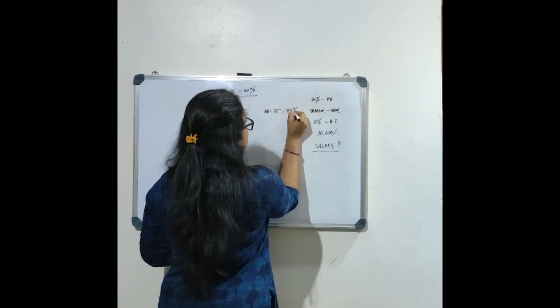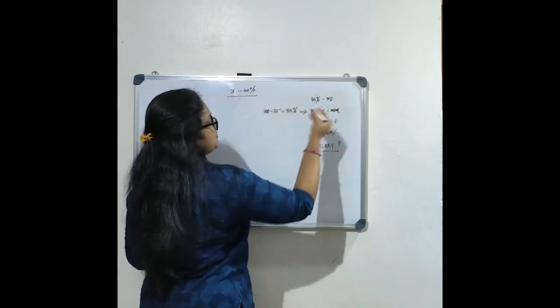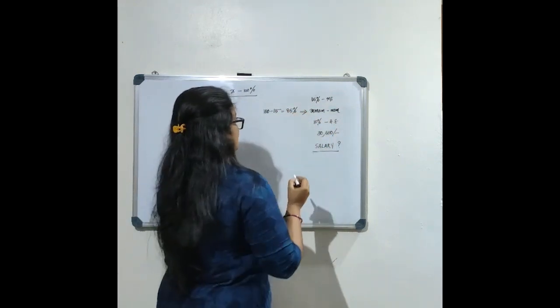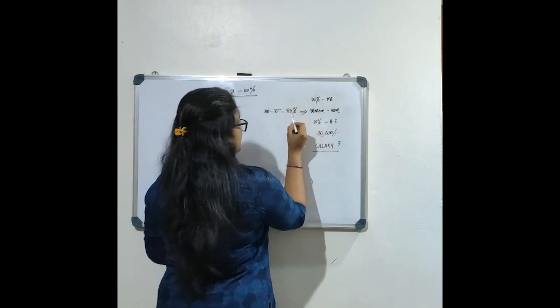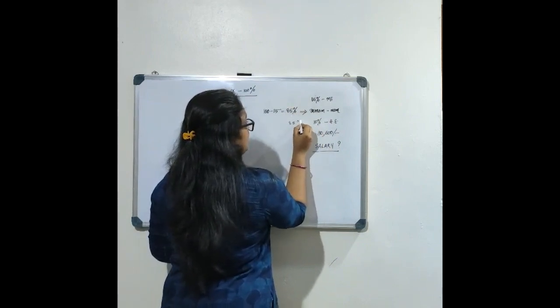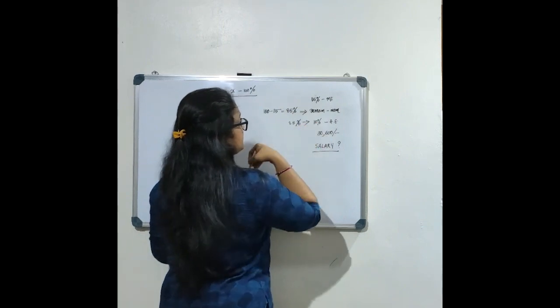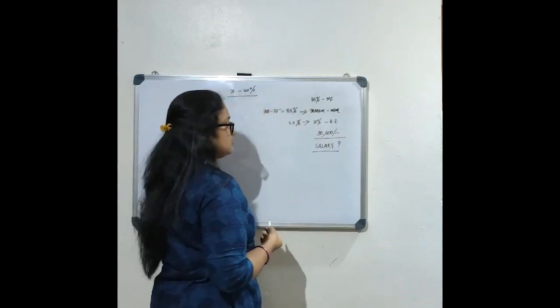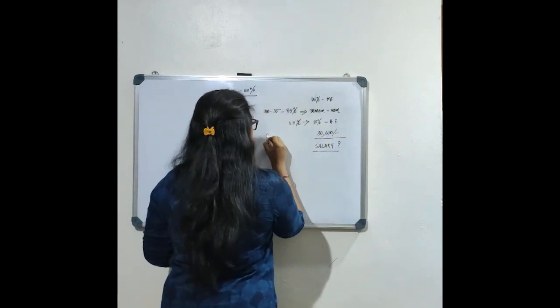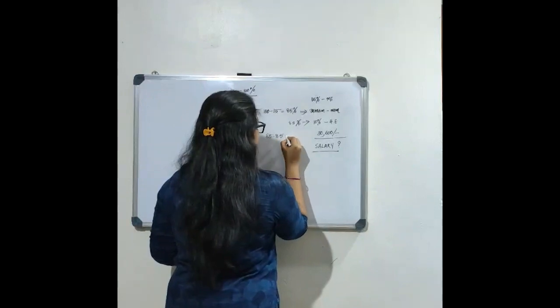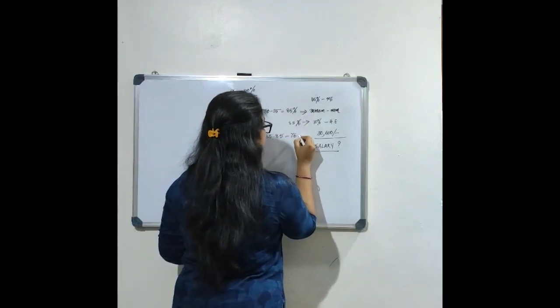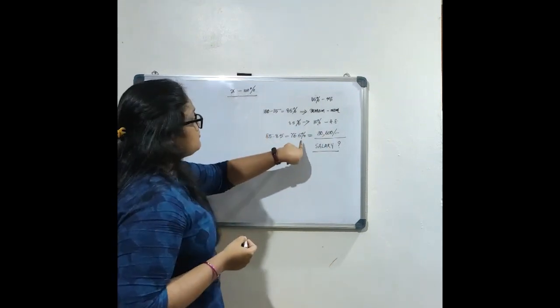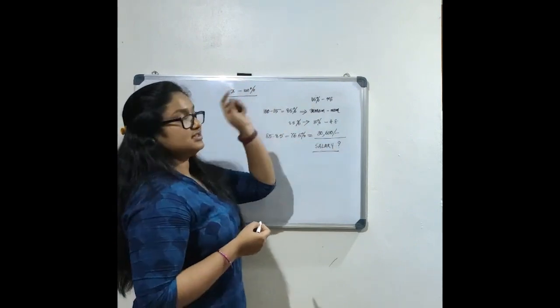That means the remaining amount, 100 minus 15 which equals 85%, was handed over to his mother. 10% of this 85% was used for household expenses. 10% of 85% equals 8.5% was used for household expenses. The remaining amount is 30,600, which is 85% minus 8.5%, that equals 76.5%. So 76.5% of x equals 30,600.